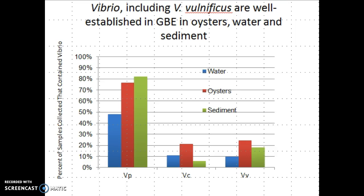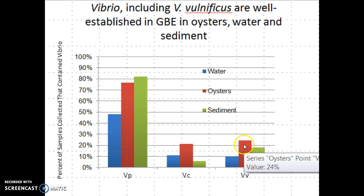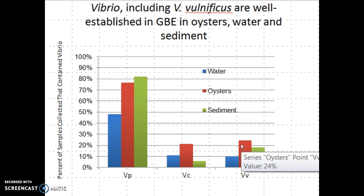From this monitoring program, we know that almost all samples of water, oysters, and sediment contain Vibrio of some sort — predominantly Vibrio parahemolyticus, but also some Vibrio cholerae and some Vibrio vulnificus. This red bar shows the percent of oyster samples collected in sampling year 2013 that contained Vibrio vulnificus — about 23 to 24 percent. So if you ate an oyster from that area in that year, you had close to a quarter — a 25 percent chance — that you would be exposed to Vibrio vulnificus. And that's pretty high.